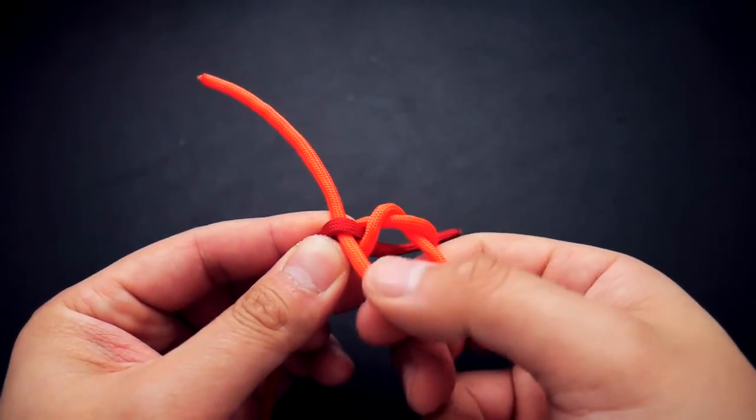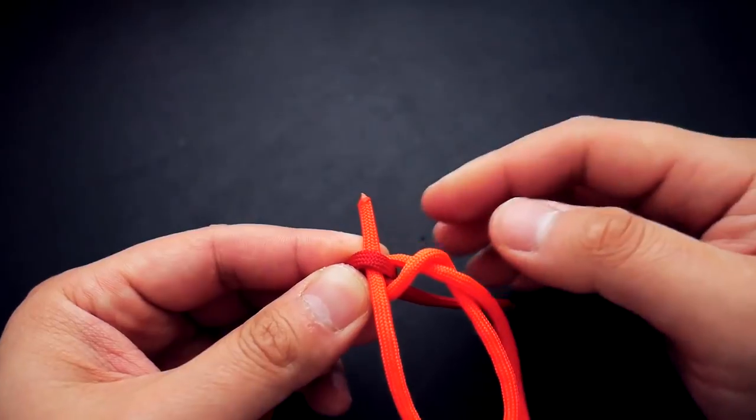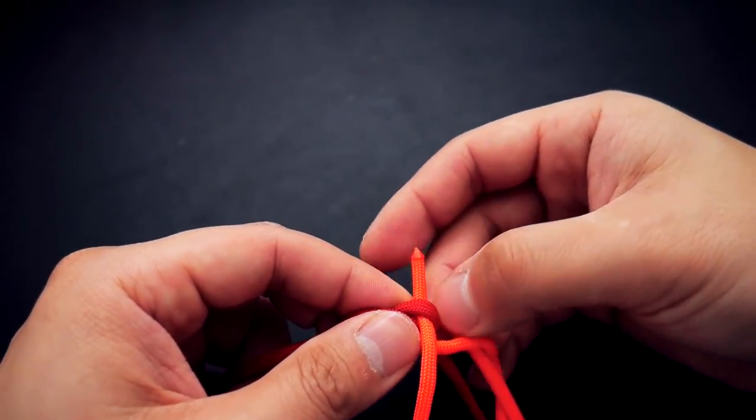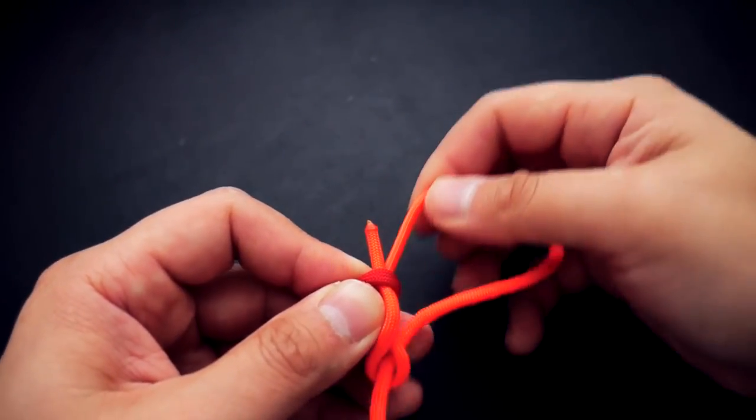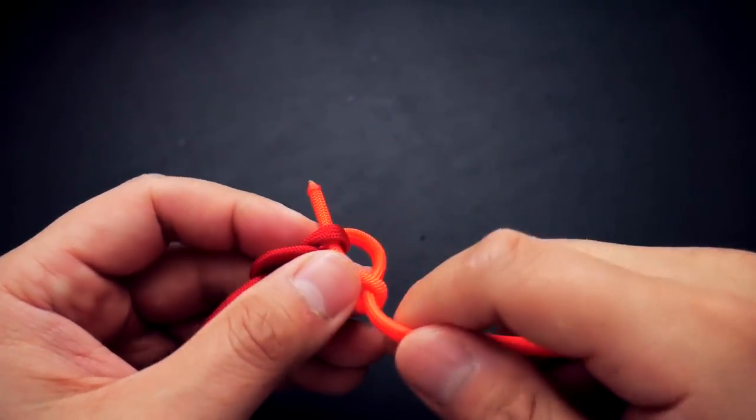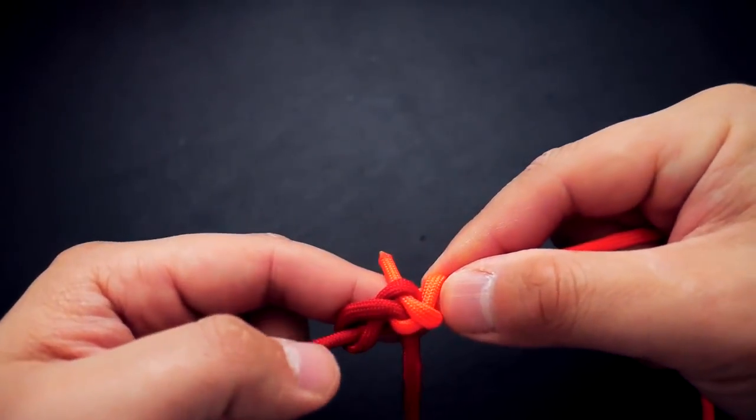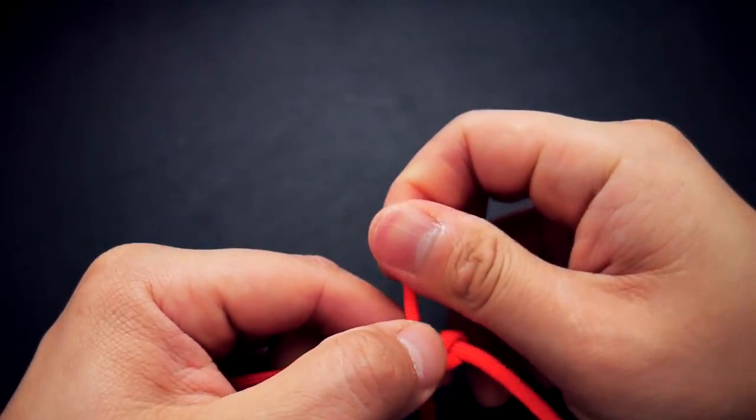As you can see, you can work out that excess cord just by moving it through the knot. You can leave a little bit of the excess there because we're going to clip that off and melt it. Just keep working that knot till it's nice and firm and it looks like the eternity knot.